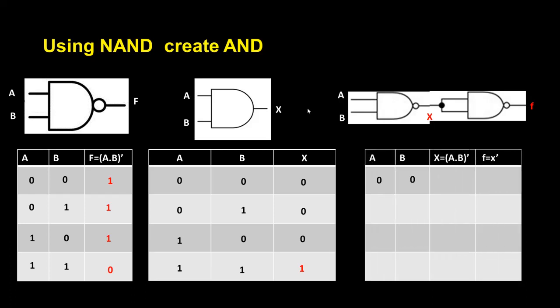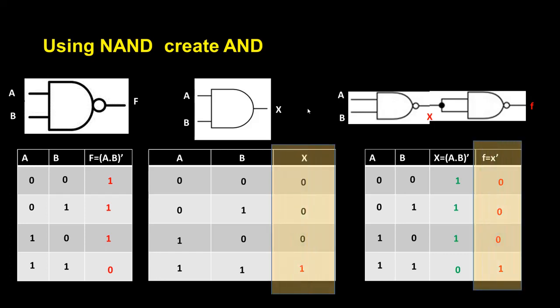So: 0,0 → 0; 0,1 → 1; 1,0 → 1; 1,1 → 1 — those are the NAND gate outputs 1, 1, 1, and 0. In front of that I put a NOT gate, therefore the opposite values come out. You can see both outputs are the same, so using NAND gate I can create an AND gate as well.